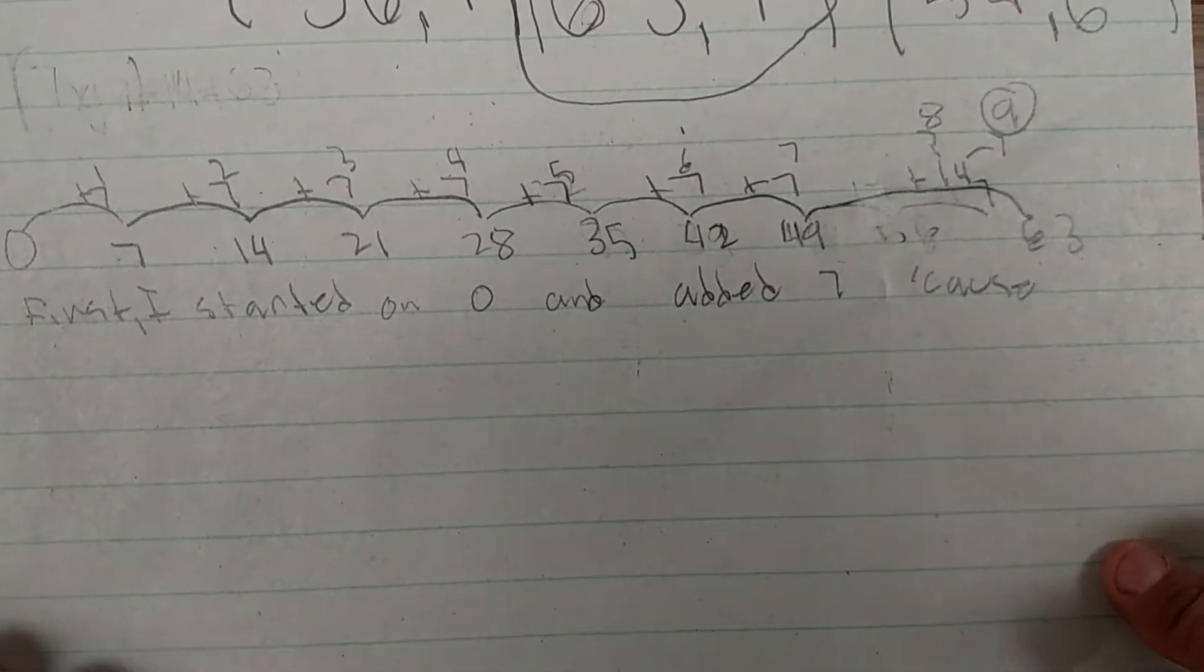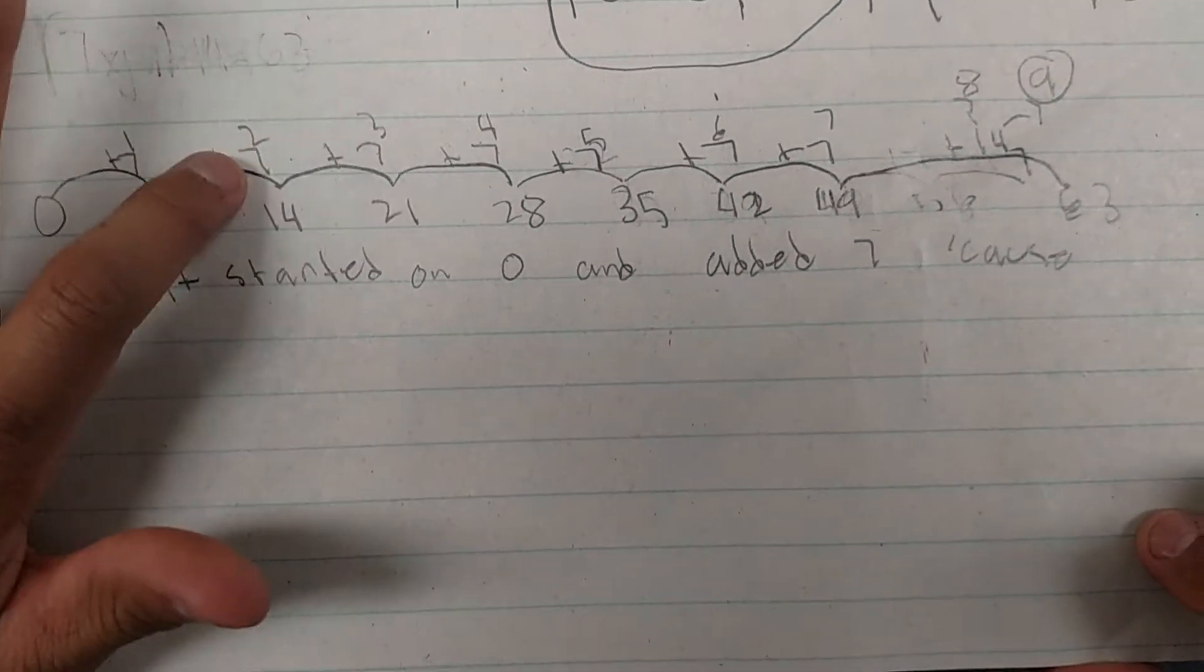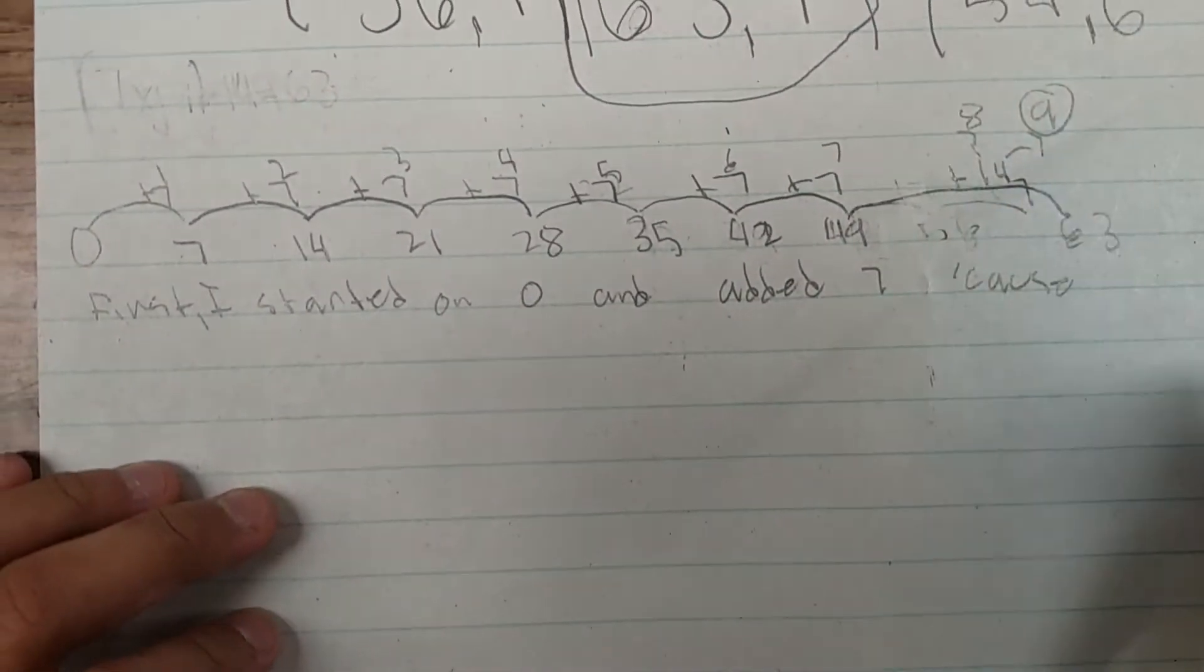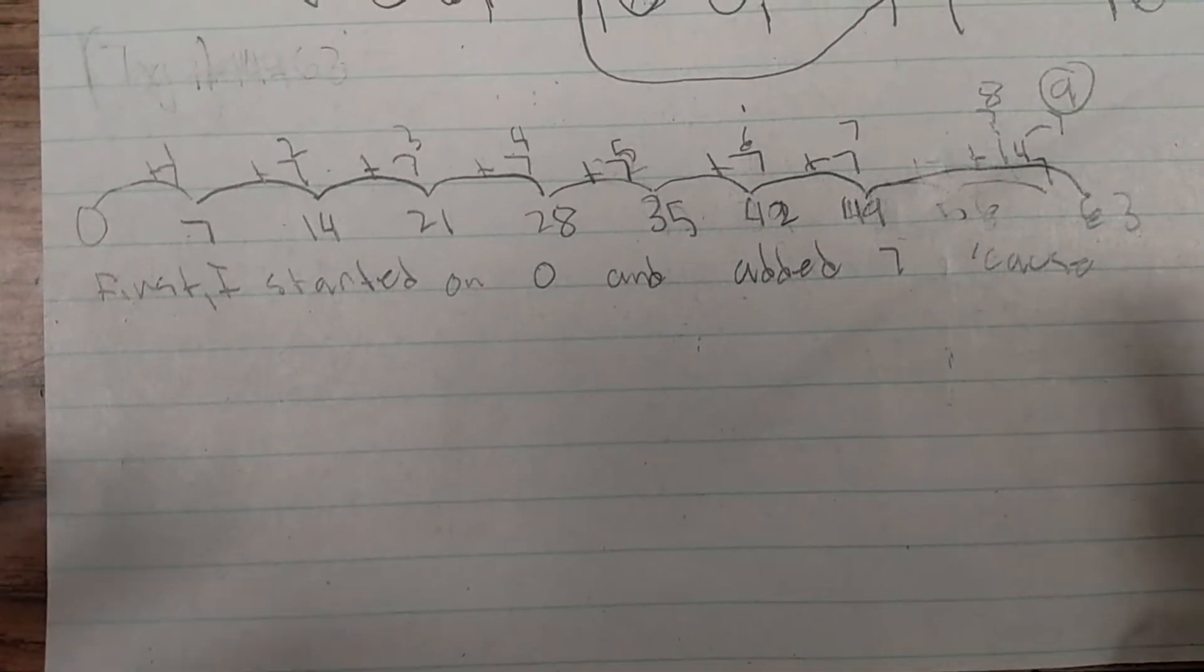So I counted how many jumps I had. So 1, 2, 3, 4, 5, 6, 7, 8, 9. So what are those? 9 what? 9 plates.